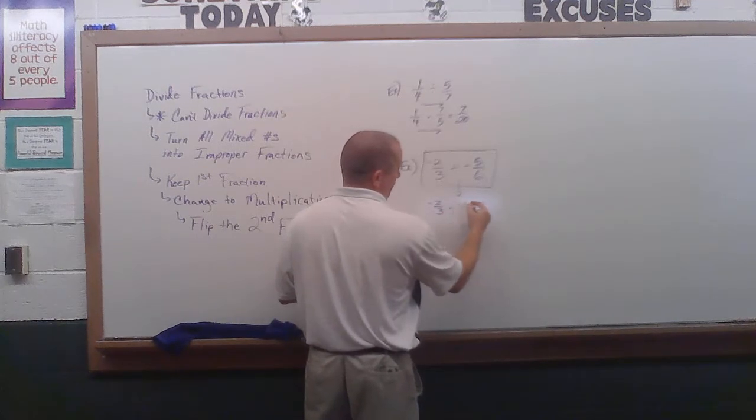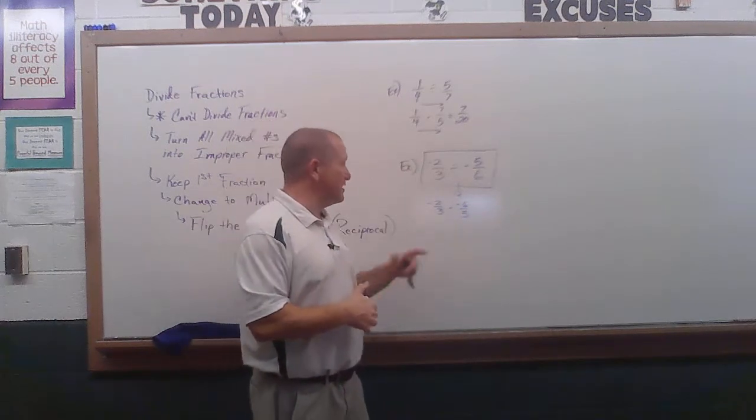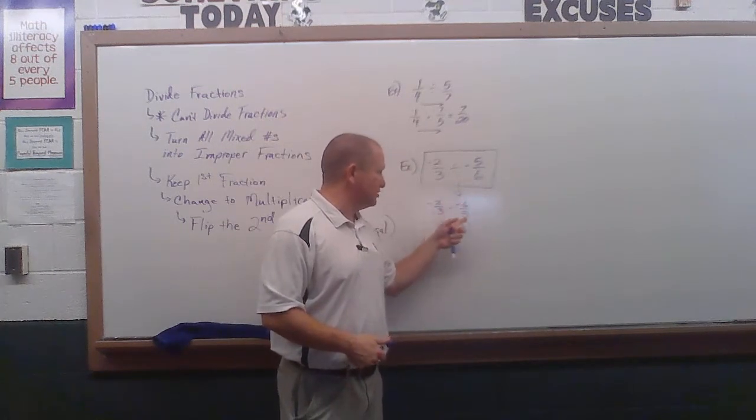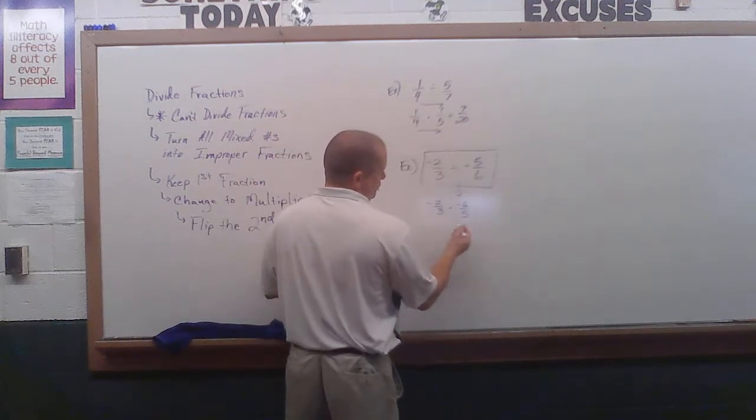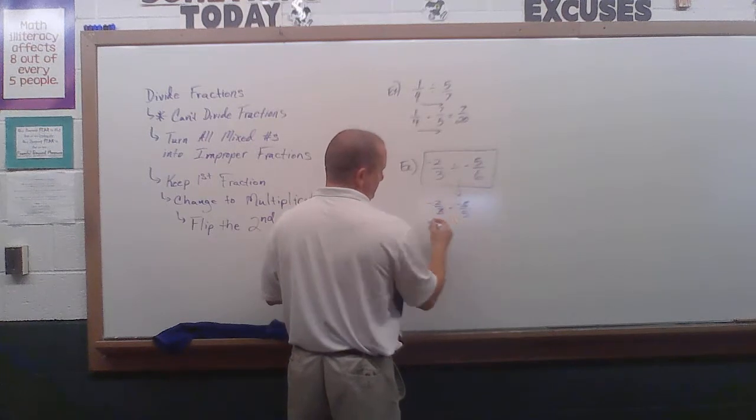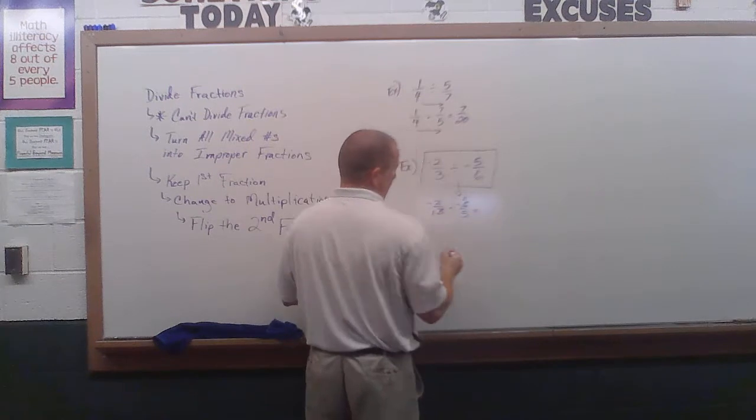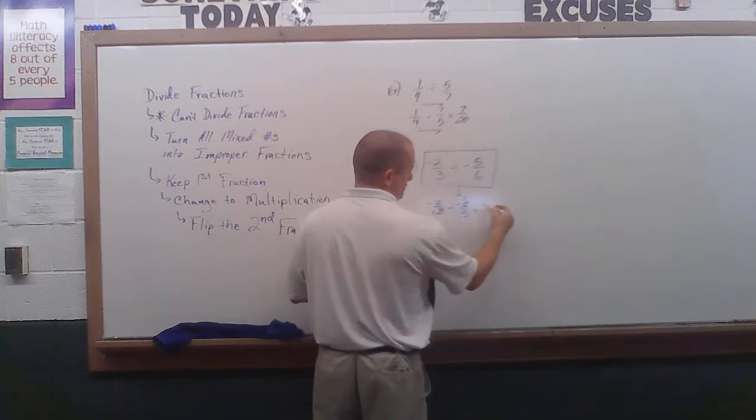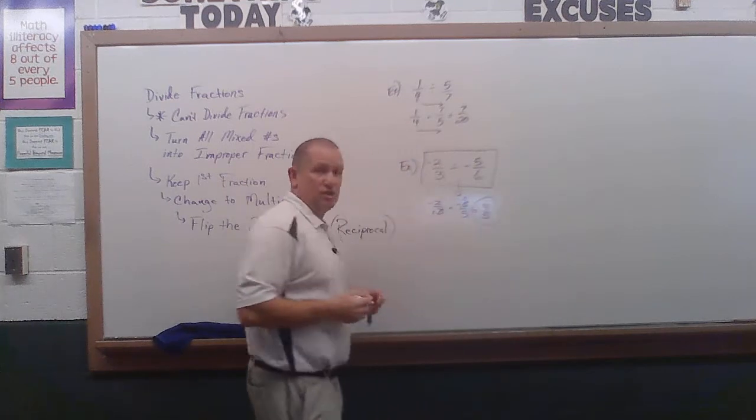So, times negative 6 over 5. And, again, if you wanted to put the negative on the bottom, that doesn't matter. You could have wrote 6 over negative 5. But now we're ready to do it, right? Okay, so my 2 and my 5 still don't, but my 3 and my 6 do. So we get 1 and 2. And then we get 4 fifths. And we already decided that the negatives were going to cancel each other out anyway. So we get 4 fifths for our answer.